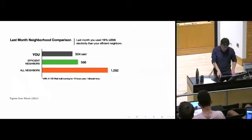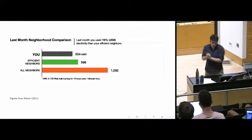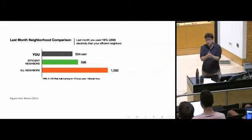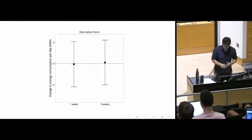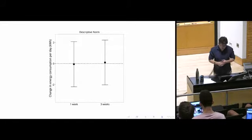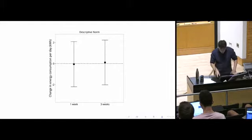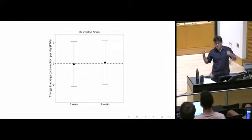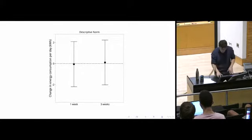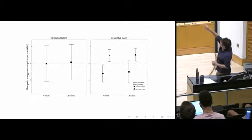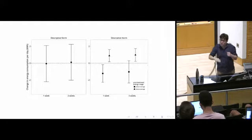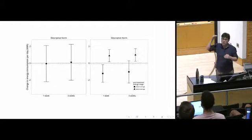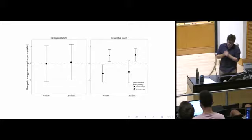If you deliver information to people about what they're consuming and what their neighbors are consuming, then measure how much electricity they consume one week and three weeks later, the treatment appears to have no effect at all. Fortunately, the researchers were more thoughtful and had the idea that what looks like a null effect is actually a combination of two different effects offsetting each other. People using more than average lowered their energy consumption to be closer to peers.